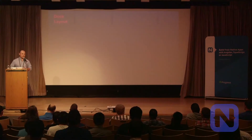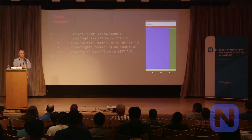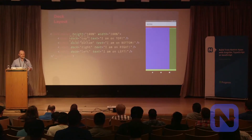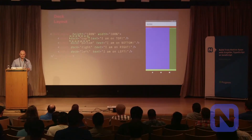The dock layout is pretty handy if you ever need to position something on a specific side within the container. Here you'll see four view labels inside the dock — top, left, right, and bottom — and on the screenshot to the side you see their positions.